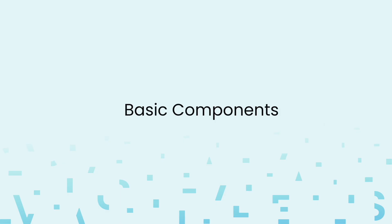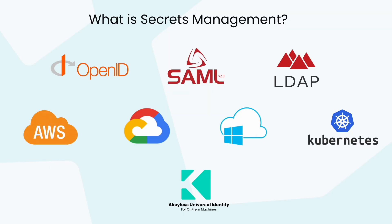Let's start with our basic components. In order to connect your organization's users and machines with Akeyless, an admin will configure an auth method, such as OIDC, SAML, LDAP, a Cloud IAM, and/or Kubernetes, in order to authenticate clients with Akeyless. We also have an on-prem machine identity authentication method called Akeyless Universal Identity. Clients will not usually be part of this process.